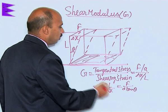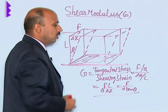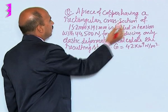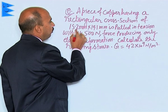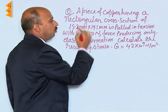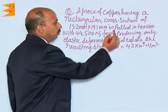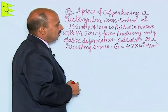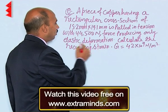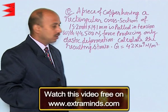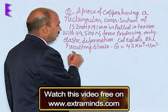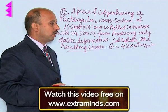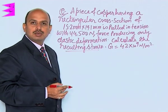This covers the concept of modulus of rigidity. Now, consider a piece of copper having a rectangular cross section of 15.2 millimeters, pulled in tension with 45500 Newtons of force, producing only elastic deformation. Calculate the resulting shearing strain, given G = 42 × 10⁹ N/m².